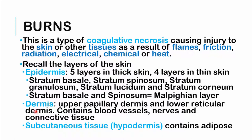Underneath the epidermis is the dermis, divided into two parts: the upper papillary dermis, which has finger-like projections adjoining with the epidermis, and the lower reticular dermis with a reticular-like network. The dermis contains blood vessels, nerves, and connective tissue. Then there is the subcutaneous tissue or hypodermis, which contains adipose.